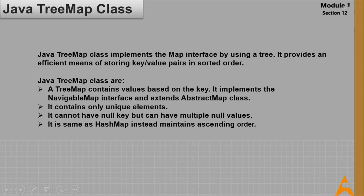Now let's discuss TreeMap. Java TreeMap implements the Map interface using a tree, providing efficient storage of key-value pairs in sorted order. Key points: it contains values based on key, implements NavigableMap and extends AbstractMap, contains only unique elements, cannot have a null key but can have multiple null values, and maintains ascending order.